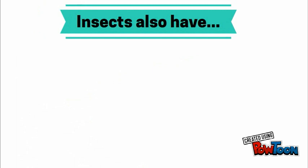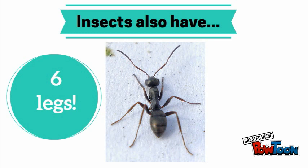All insects also have six legs. There are three on each side of their bodies. Let's count the legs on this ant together. Ready? One, two, three, four, five, six. Nice work!